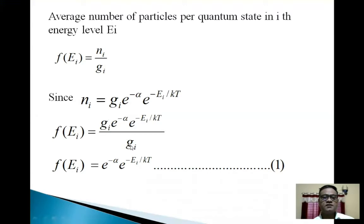So this gi will get cancelled. So we get f(Ei) = e^(-α)*e^(-Ei/kT). Equation 1.